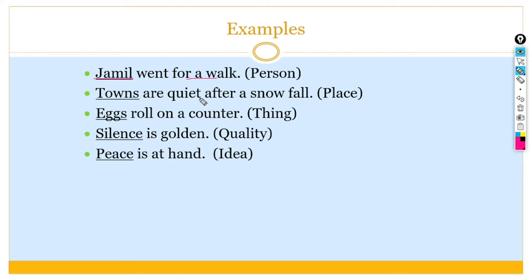Towns are quiet after a snowfall. So, in this sentence, town is a place. Eggs roll on a counter. So, eggs are things. Silence is golden. So, silence is a quality and it's also a noun and it can be used as a subject.